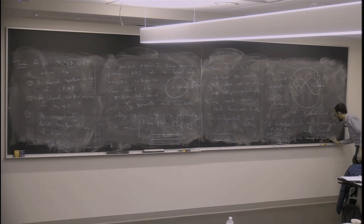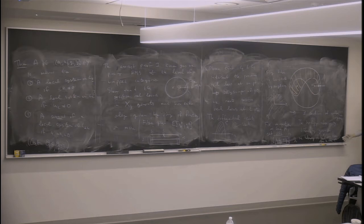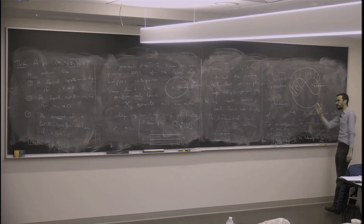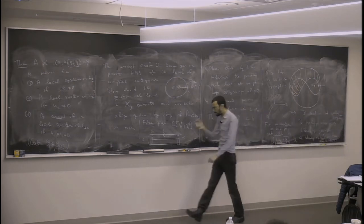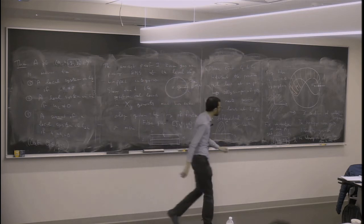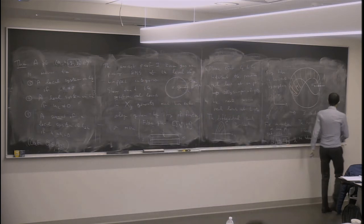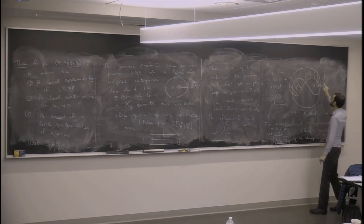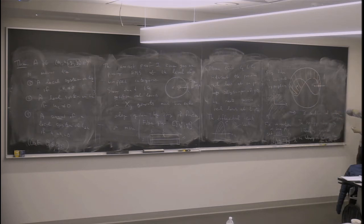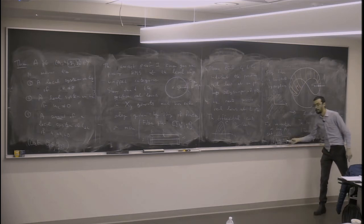If you were to work away from these things — if you were to work in different regions — there would be a section in each one. There are exactly three sections of the Lefschetz fibration. And now, how do they differ from each other? They differ from each other by their intersection with certain divisors. If you think about H₂ of the total space, you can detect it by H₁ of the boundary. The homology classes in the boundary differ by generators.